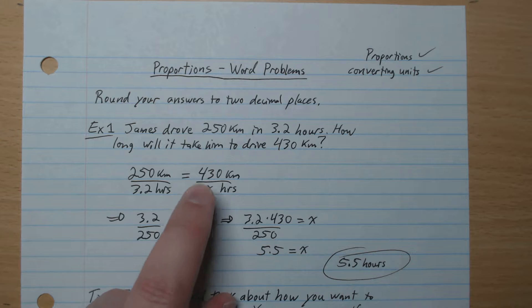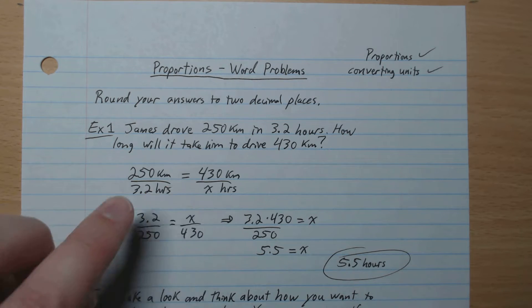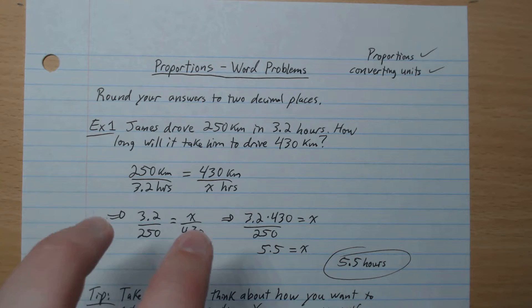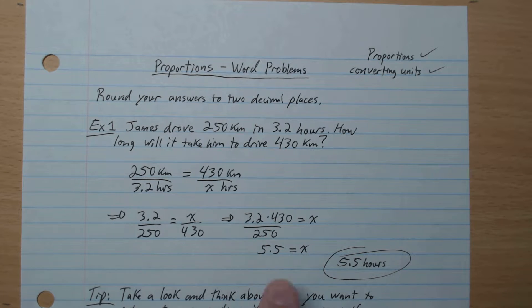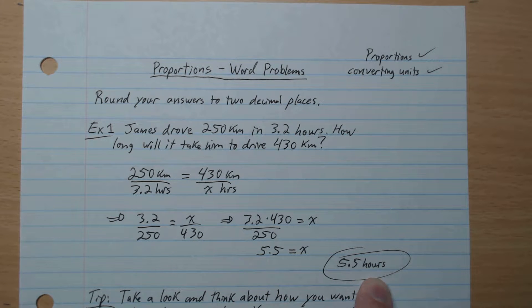Our goal here is to isolate x. From our proportions video we remember that this is equivalent to the flip, like that. Then we're going to go times 430 on both sides to isolate x. So 3.2 times 430 divided by 250 gives 5.5. Our answer here is five and a half hours.